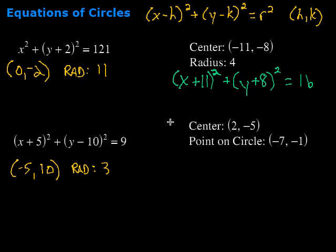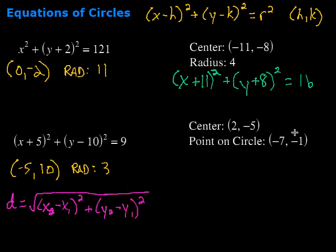Remember, the distance formula is d equals the square root of x sub 2 minus x sub 1 squared plus y sub 2 minus y sub 1 squared. So, we're going to fill those things in. Let's call this our x sub 2 and y sub 2. We have the square root of negative 7 minus 2 squared plus negative 1 minus negative 5, which would be plus 5 squared.